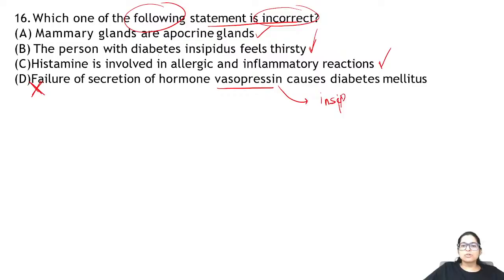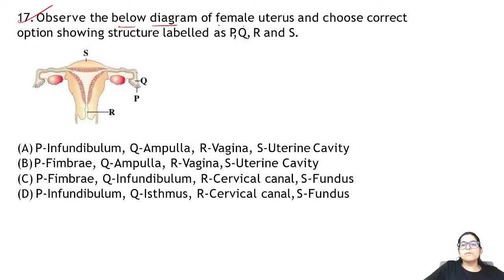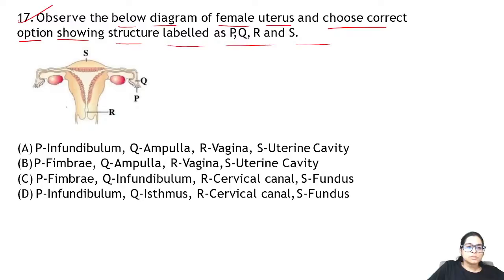Zoology Question 17: observe the diagram of the female uterus. P, Q, R, N, S: the finger-like structures are fimbria, then infundibulum, then cervical canal, and the top is fundus. The answer for 17 is C.